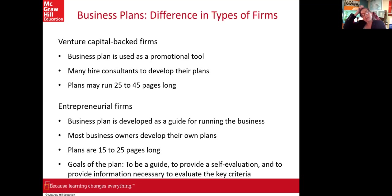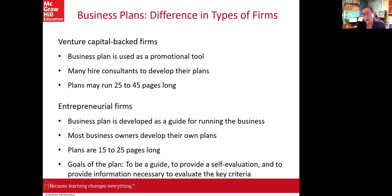We've talked about different types of firms — VC-backed and entrepreneurial. For VC-backed firms, the business plan is typically written as a promotional tool, used to bring consultants on board and entice executives, typically 25 to 45 pages, very glossy and graphic. In contrast, entrepreneurial firms develop their business plan as an actual guide to running the business, typically written by the business owners themselves, shorter at 15 to 25 pages, with the goal of providing a guide, self-evaluation, and information to evaluate key criteria.